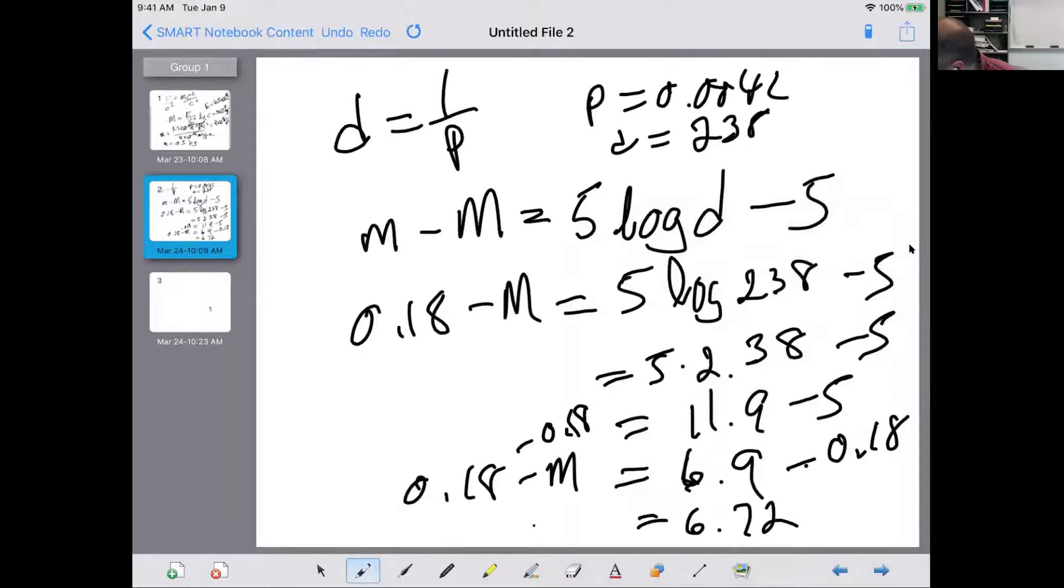And that is 0.18 minus your absolute magnitude. So we can subtract 0.18 from both sides. On my calculator, that gives me 6.72. And that's negative M. So we've multiplied both sides by negative one. Now positive M is negative 6.72. That was a lot.